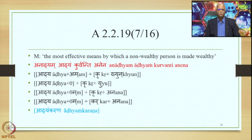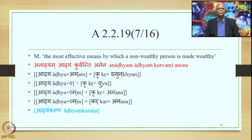Here is an example. The meaning to be conveyed is: the most effective means by which a non-wealthy person is made wealthy. The most effective means indicates the Karana; making a non-wealthy person wealthy indicates Abhuta Tadbhava. So we have the Laukika Vigraha: Anadhyam Adhyam Kurvanti Anena. The suffix Khyon is added in the sense of Karana, indicated by the word Anena in the Laukika Vigraha.